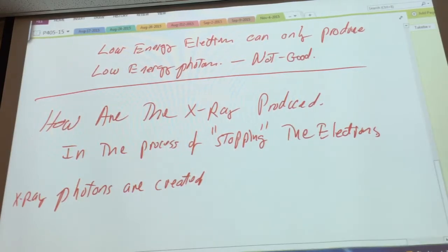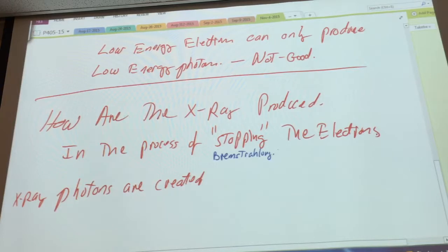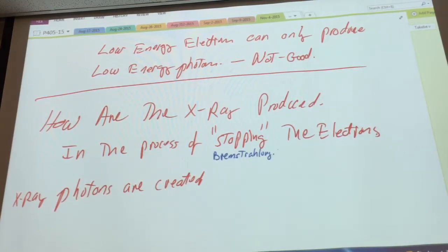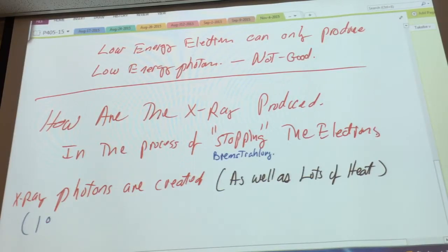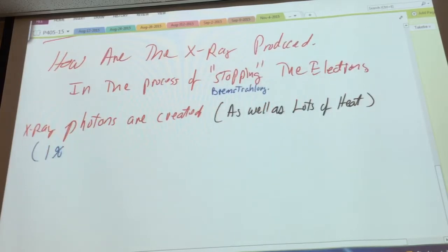That beautiful word — Bremsstrahlung, German for stopping. In the process of stopping the electrons, that Bremsstrahlung process, x-ray photons are created, as well as a lot of heat. And they say that about 1% of the electrons produce photons.